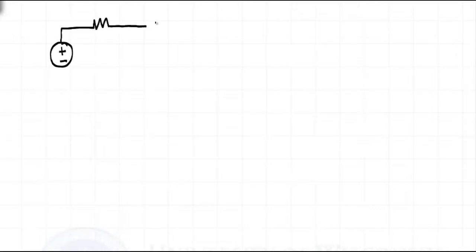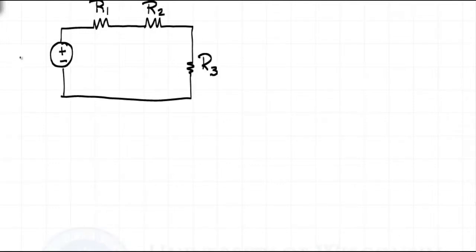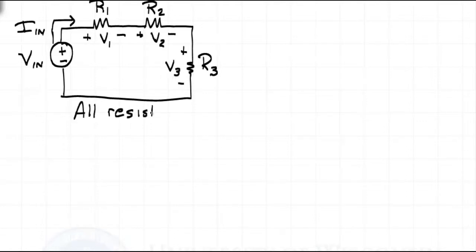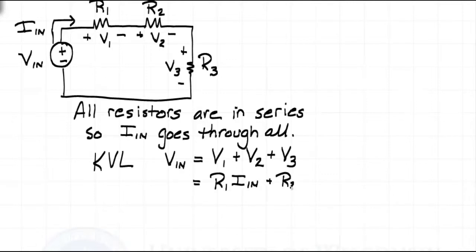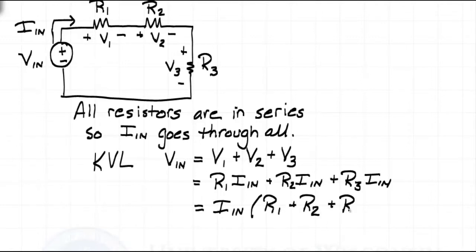We can do the same thing with three resistors. If we have a circuit with resistors R1, R2, and R3, with the voltage source VN, we can again call the current leaving the source IN and define the voltages across the resistors as V1, V2, and V3. Since all the resistors are in series, by KCL, IN goes through all of them, so there's only one current in the circuit. Using KVL, we write VN equals V1 plus V2 plus V3. Substituting Ohm's Law, we have R1 times IN plus R2 times IN plus R3 times IN. IN is common to all the terms, so we factor it out: VN equals IN times the quantity R1 plus R2 plus R3, which we can rewrite as IN times R_equivalent.